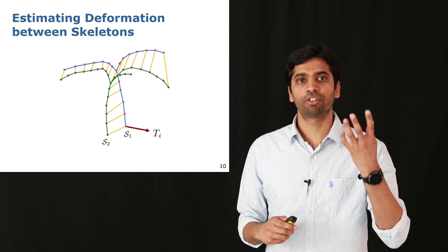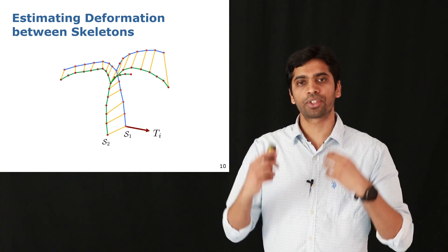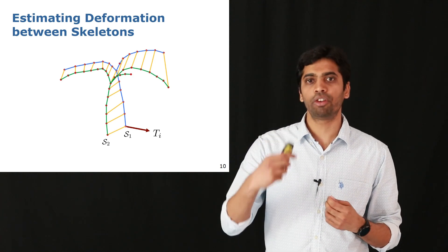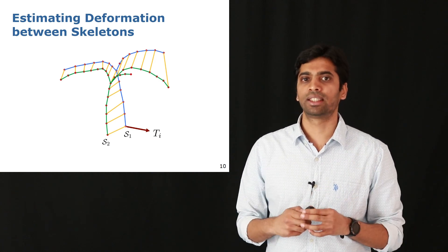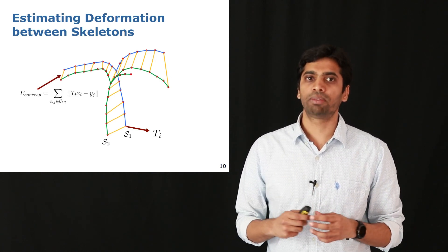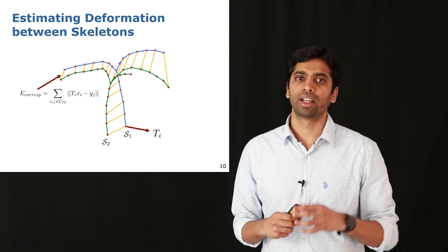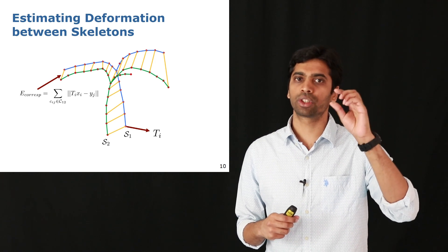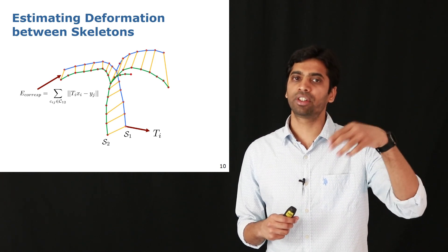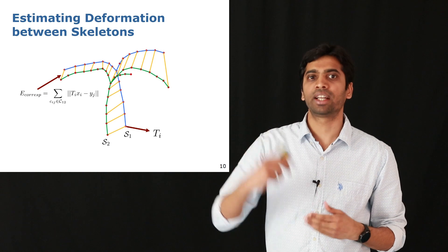Then the question of estimating the deformation becomes an optimization problem where we solve for these affine parameters for each node by minimizing a certain energy. The first part of that energy is given by the correspondence error.